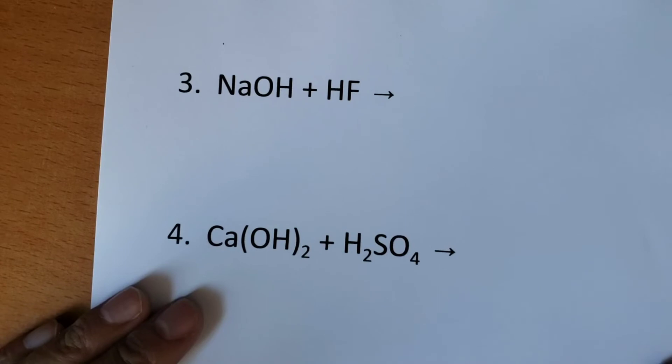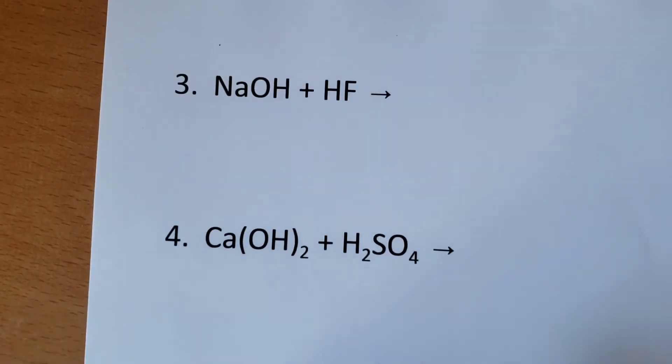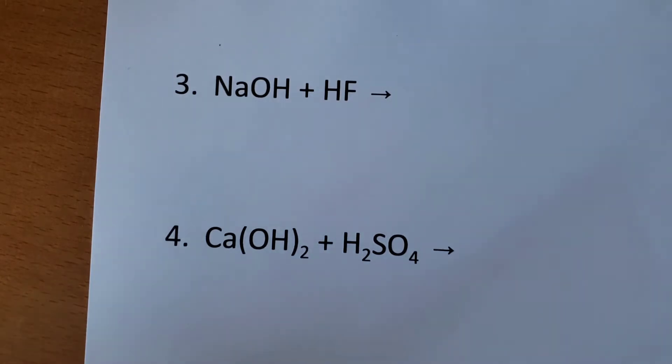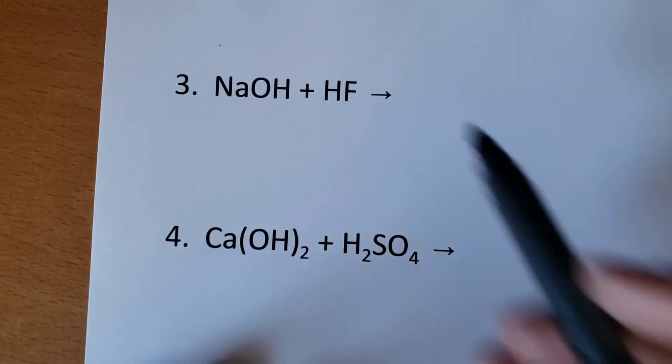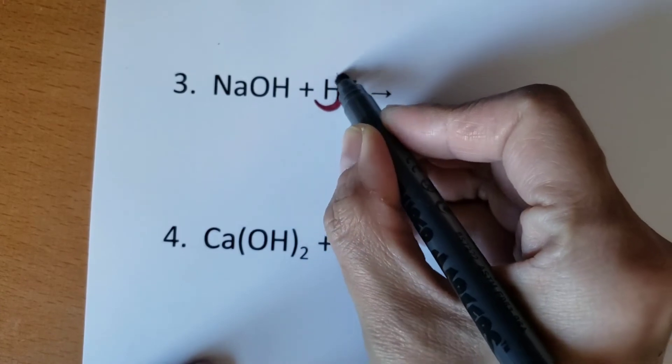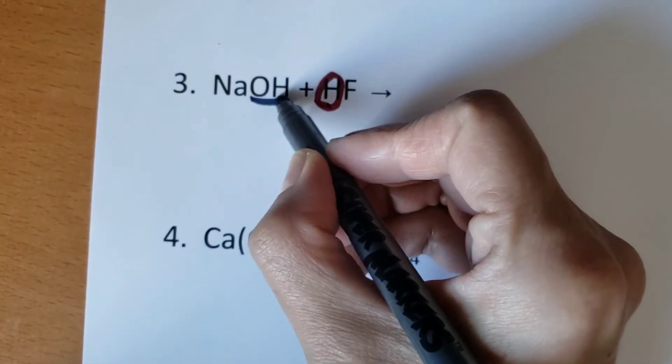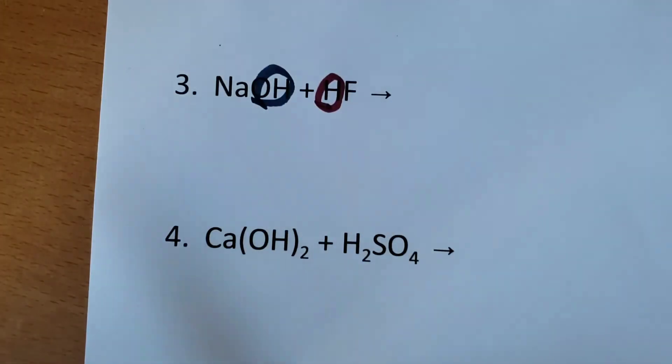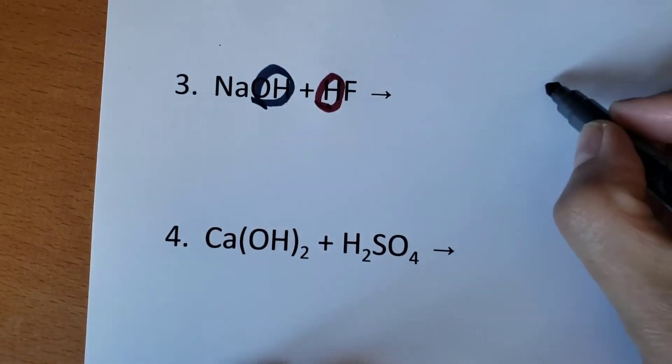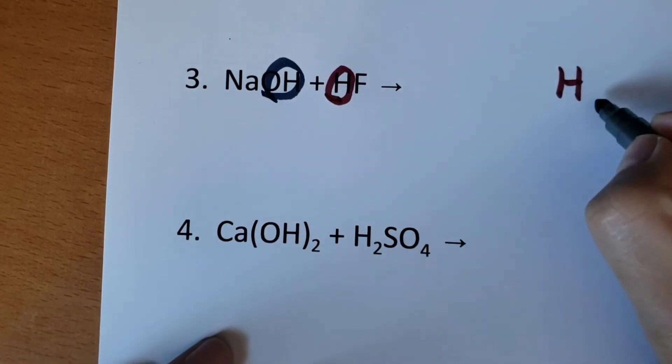So hopefully now you're getting the hang of this. So what we're going to do is we're going to look for the acid. Acid usually starts with H. So here's my acid. And bases usually end in OH. So here's my base. I'm going to bring those two things together. Those will make HOH, which is water.